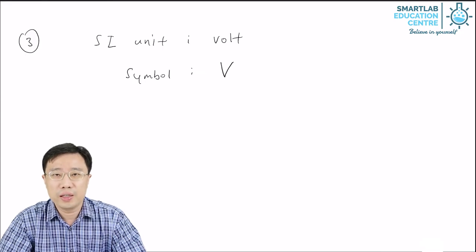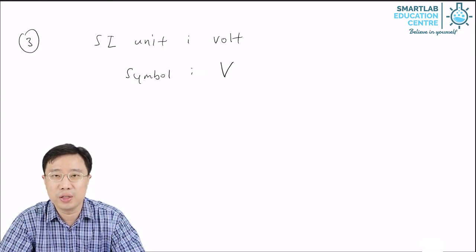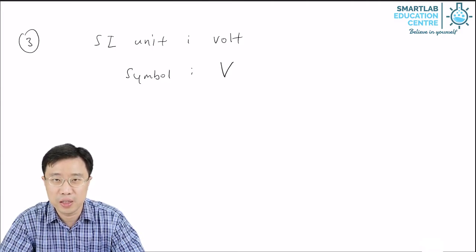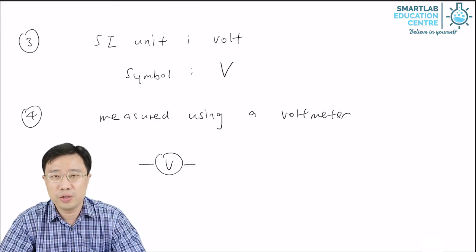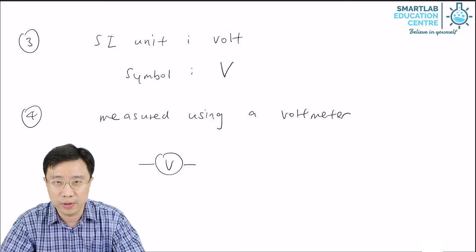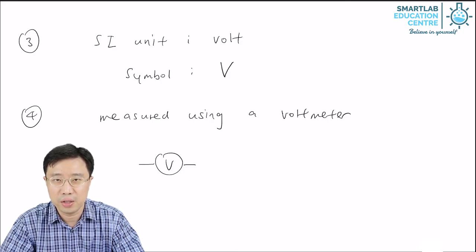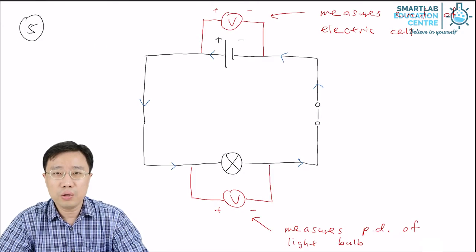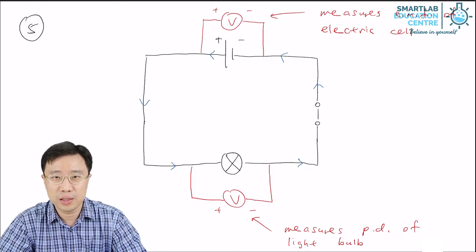Just like electric current, voltage has a unit. The SI unit is called the volt, and the symbol is a capital V. Voltage is measured using an instrument called the voltmeter. The symbol for a voltmeter is a circle with a capital V inside, with a wire on each side. Now, how do you connect a voltmeter in your circuit?